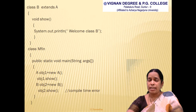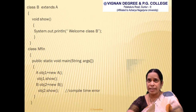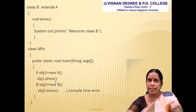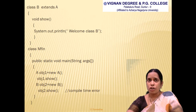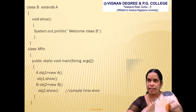The third class 'MFin' is the main class. Within the main method, an object 'obj1' is created for class A, and obj1.show() invokes A's final show method. An object 'obj2' is created for class B. Since class B attempts to override the final method, executing obj2.show() will produce a compile-time error — final methods cannot be overridden in the subclass.